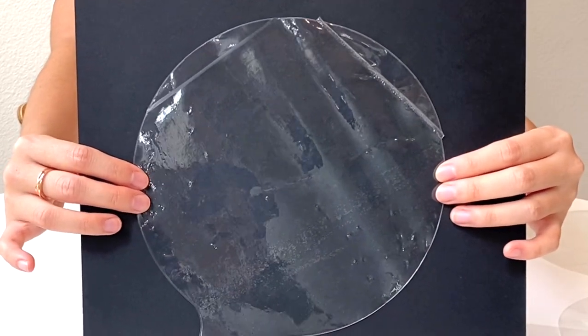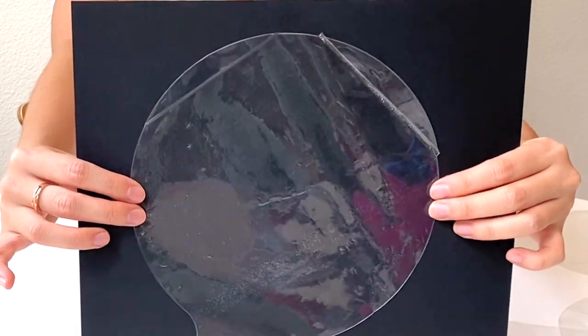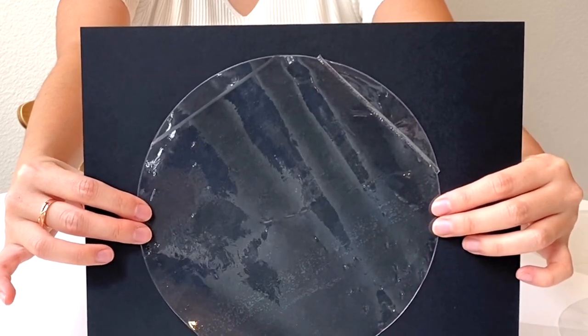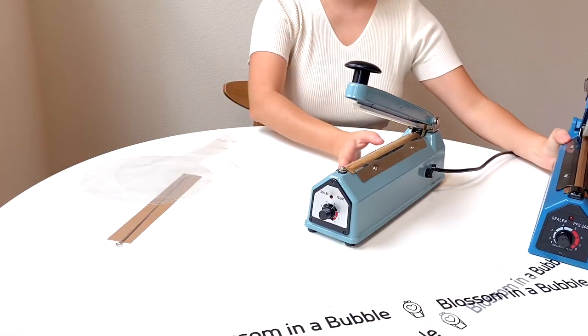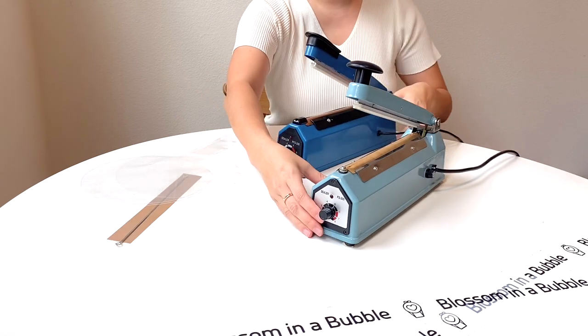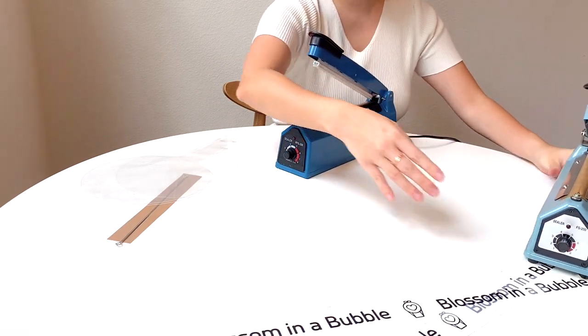The first line is okay. The second line is already melted. So you have to find your right number. Thicker vinyl need a higher number. But our bubble balloon is pretty thin.